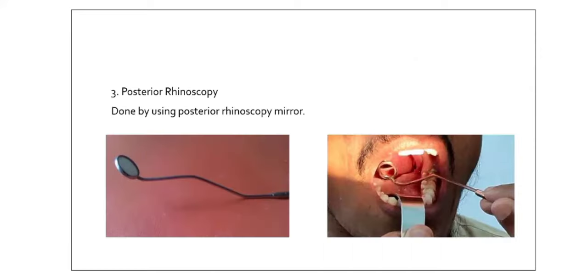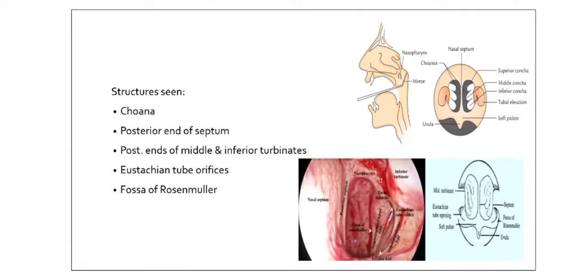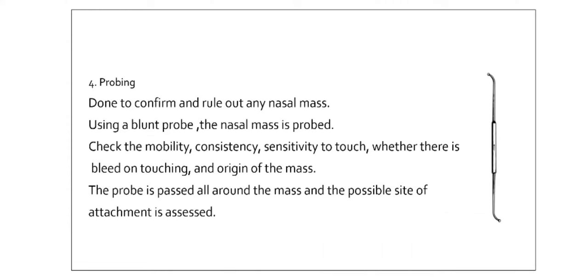Posterior rhinoscopy is done using a posterior rhinoscopy mirror. You see structures in the posterior part of the nasal cavity: the choanae, posterior end of the septum, posterior end of the middle and inferior turbinates, Eustachian tube orifice, and the fossa of Rosenmüller, which lies just behind the Eustachian tube opening.